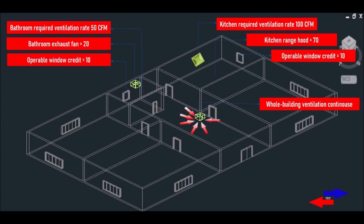There are operable windows in the kitchen and in the bathroom. The bathroom has an exhaust fan which we measure at 20 CFM and the kitchen has a range hood that we measure at 70 CFM. We get 10 credits per window per room regardless of how many windows there are.